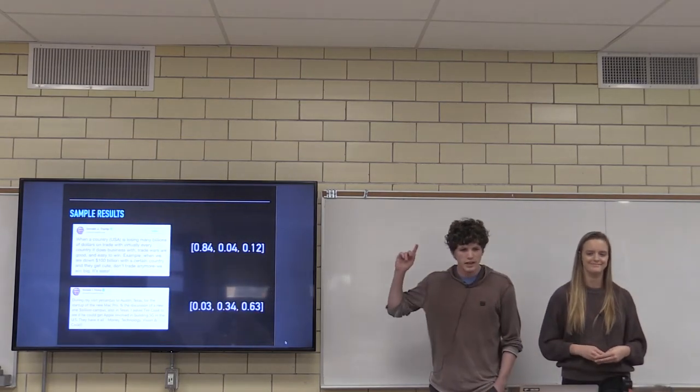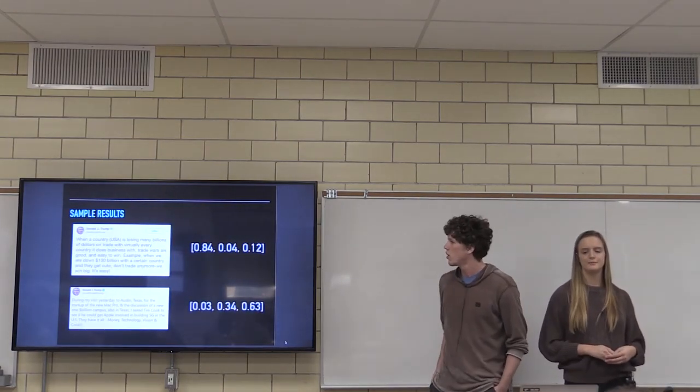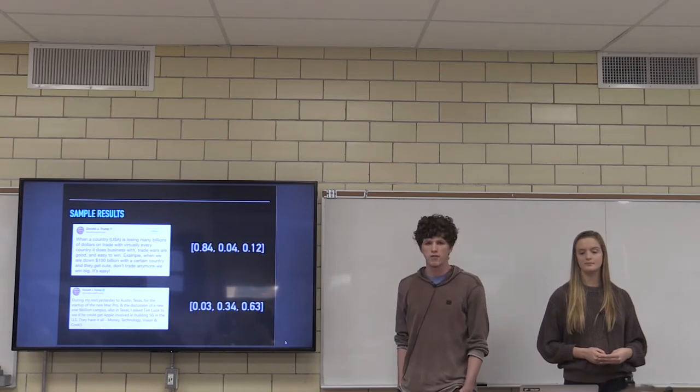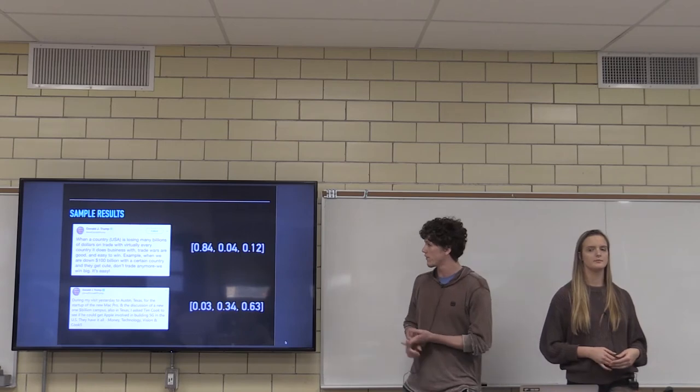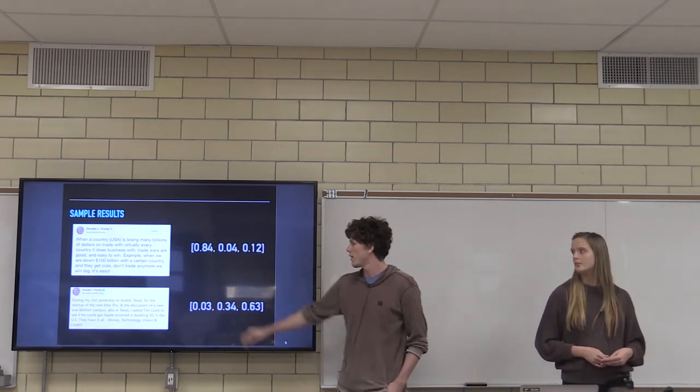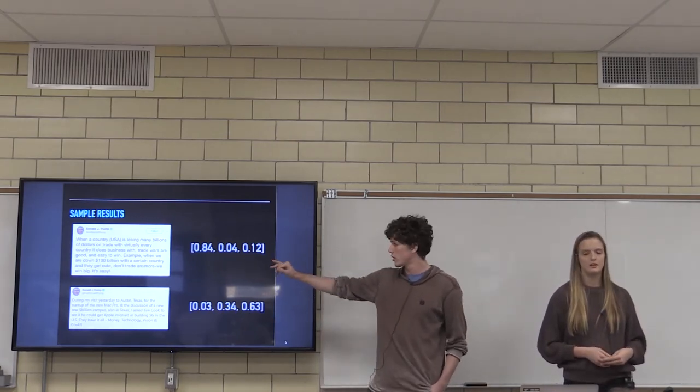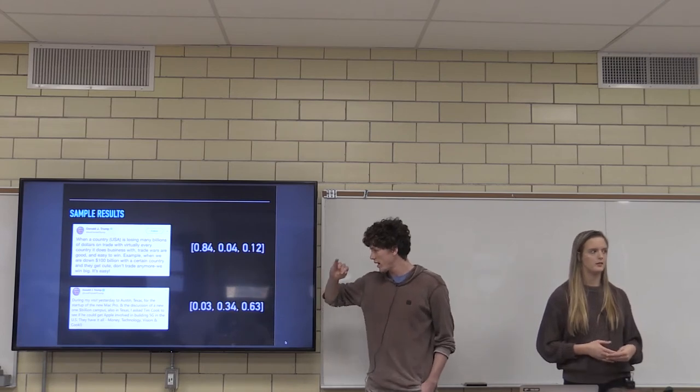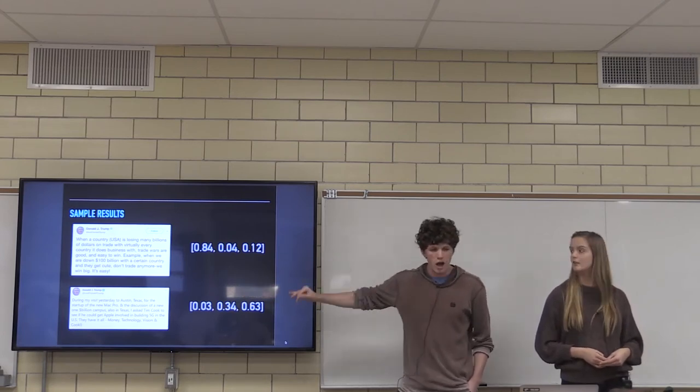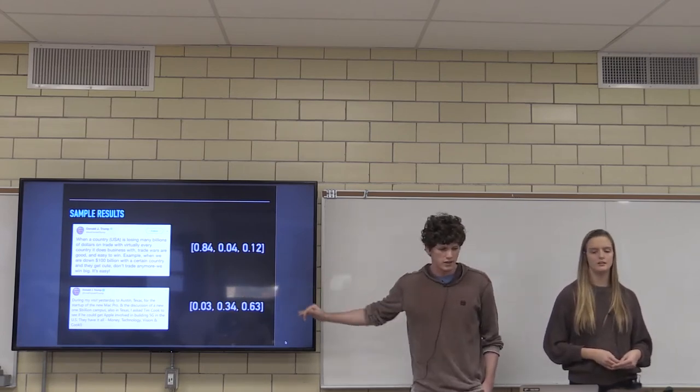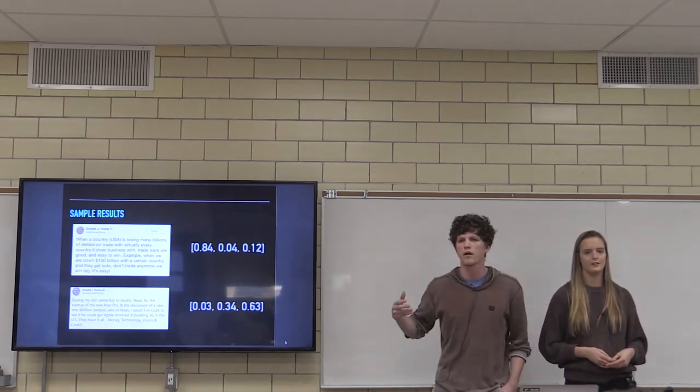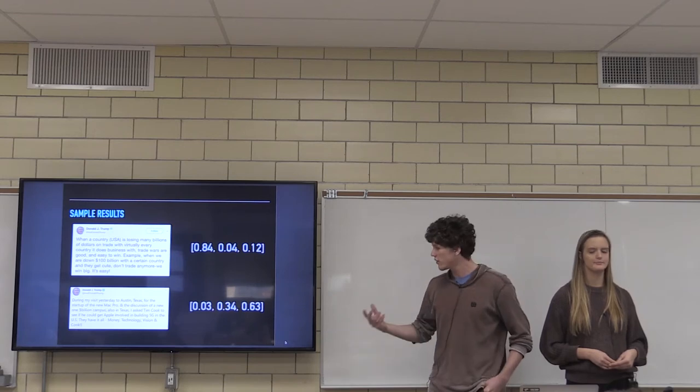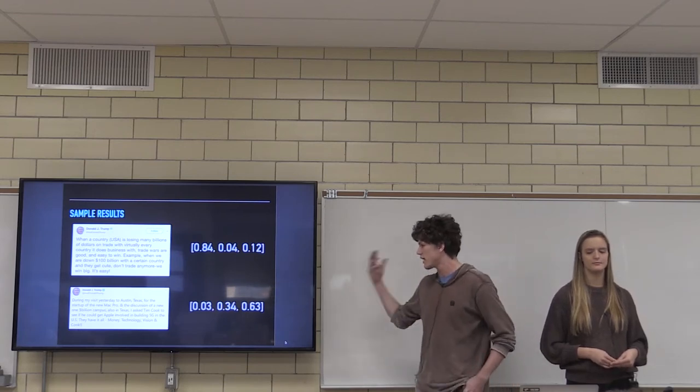So take this tweet here from 2018. This tweet is fairly straightforward for the model. It discusses trade wars which is generally bad for the economy and our model was effectively able to pick that up, 84% stock market go down. But on the other hand we have this tweet which was not included in the dataset from five days ago from Donald Trump. It discusses Apple building a new factory in Austin. Everything looks positive about it, 5G technology, however,